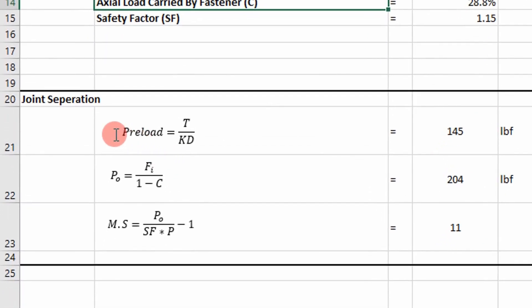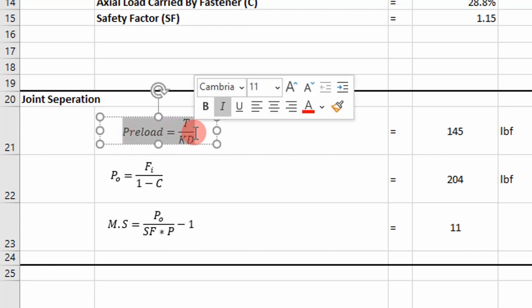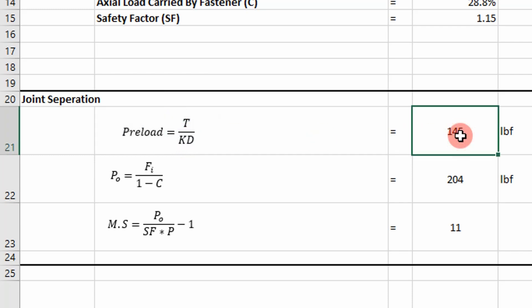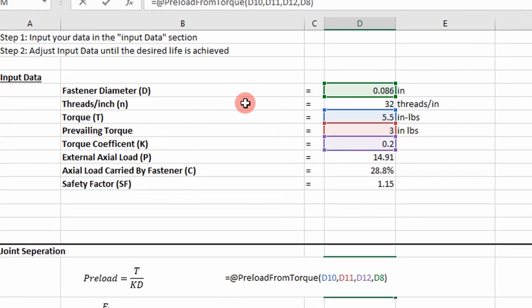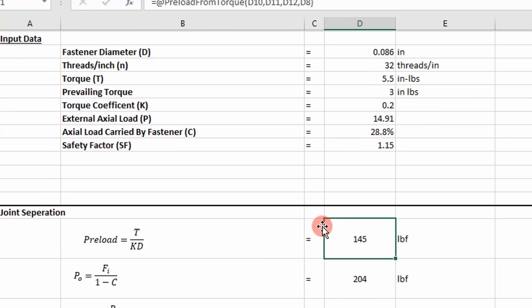So it's a real simple calculation. The first step is to calculate the preload force. So it's equal to the torque applied to the fastener divided by the torque coefficient divided by the diameter of the fastener. And actually the inputs in this VBA function include the fastener diameter, but it also includes the prevailing torque. So we have to subtract that from our actual torque to calculate this preload.